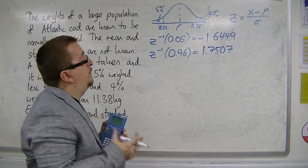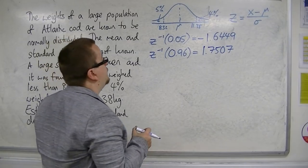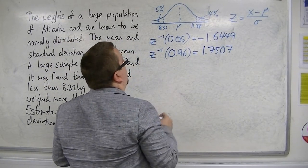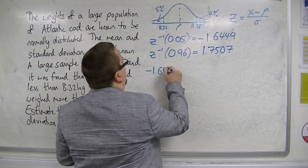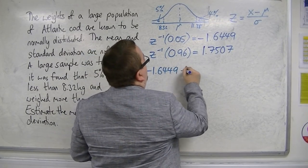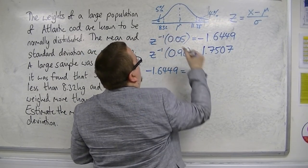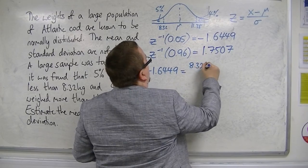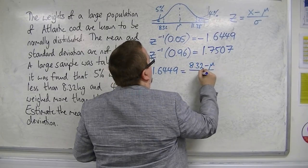So, that now allows us to write down two equations. Substituting in, we've got minus 1.6449 is equal to x, which is 8.32, take away the mean over the standard deviation.